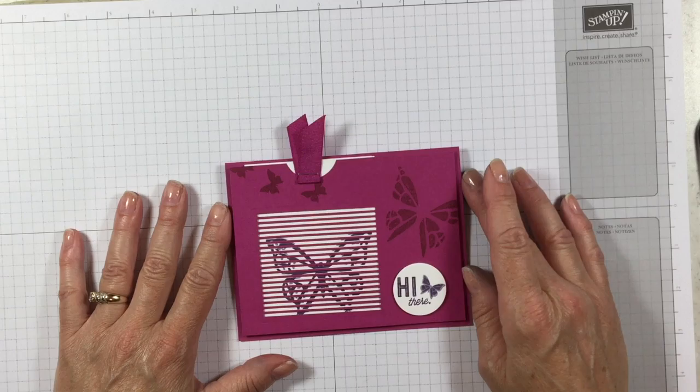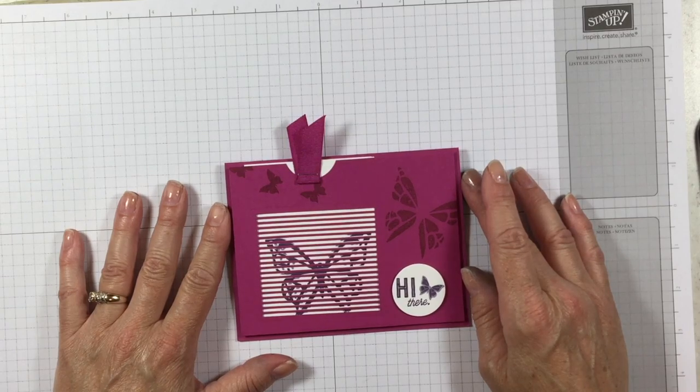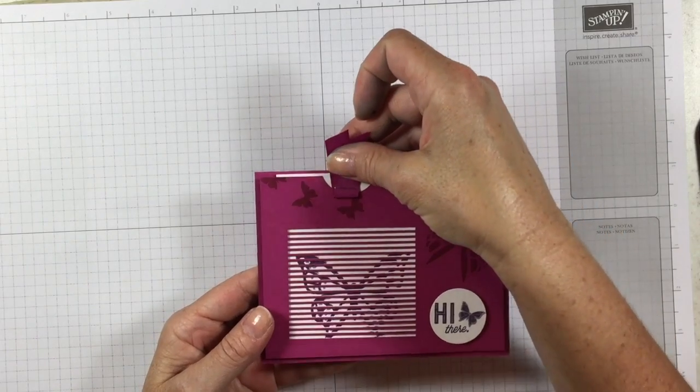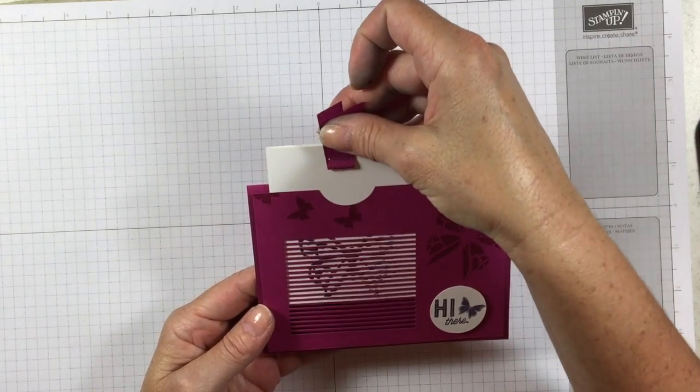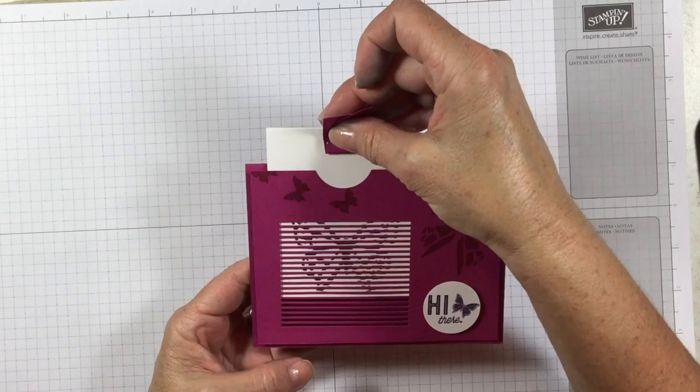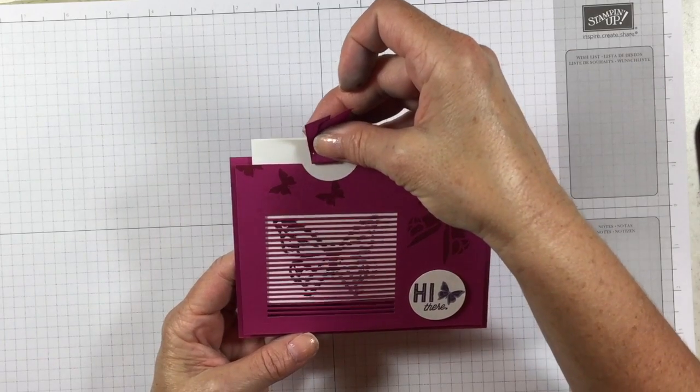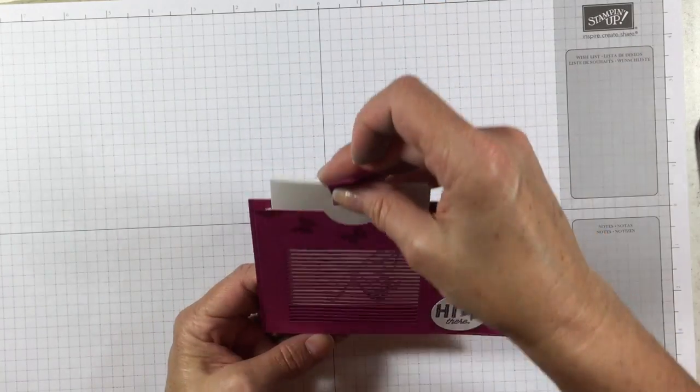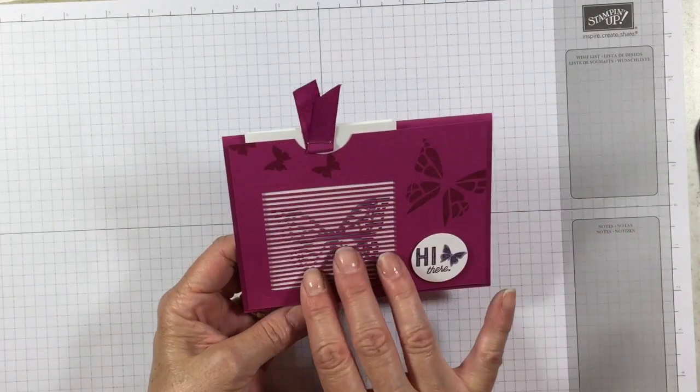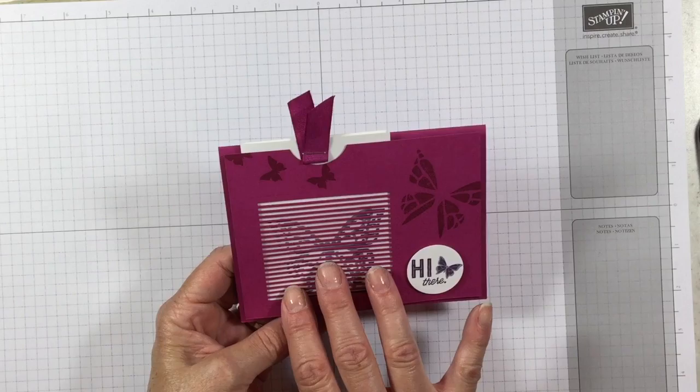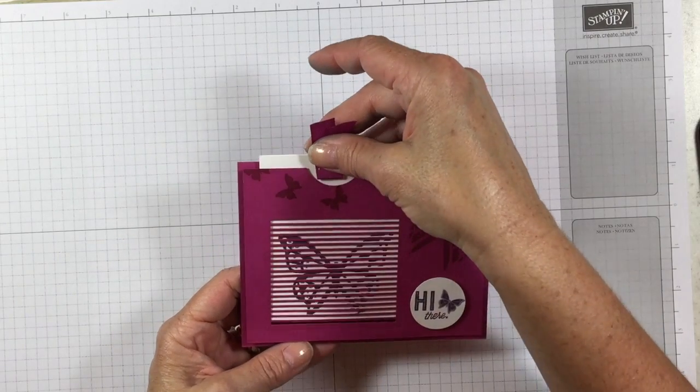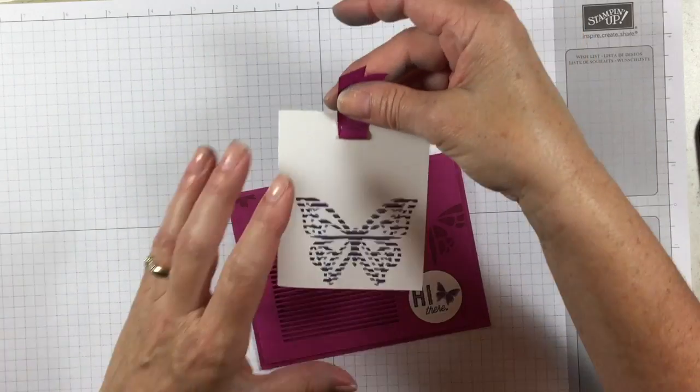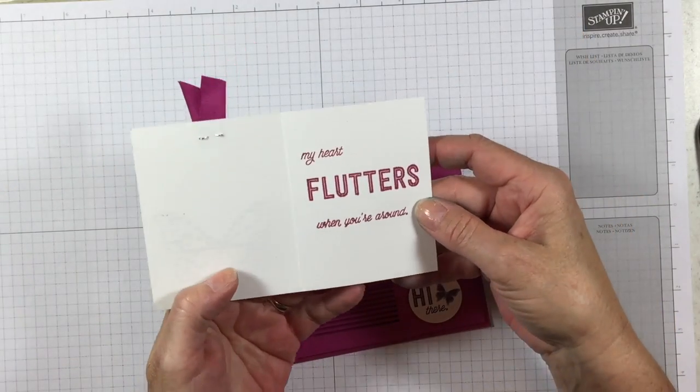I have a really fun moving card for you today using berry burst. Check this out! I don't know if you can pick this up on the camera, but can you see the butterfly fluttering? Oh my gosh, it depends on which angle you're at, but these slats in this bundle make the butterfly look like it's flying.